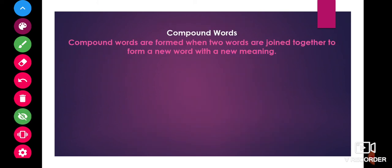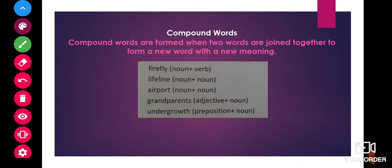Now, let us see compound words. Compound words are formed when two words are joined together to form a new word with a new meaning. Let us see some examples. Here, fire plus fly. Firefly is a compound word. Here, fire is a noun and fly is a verb.